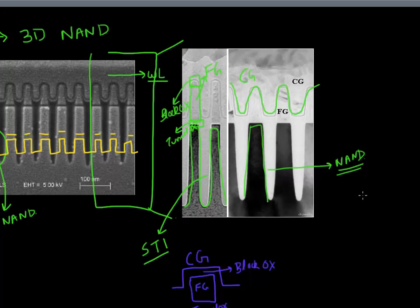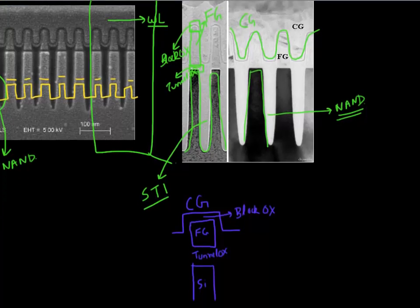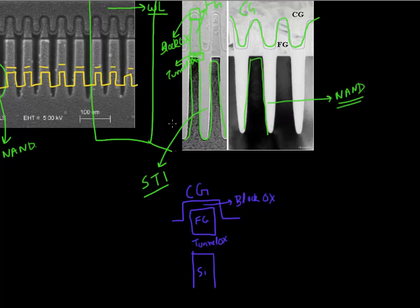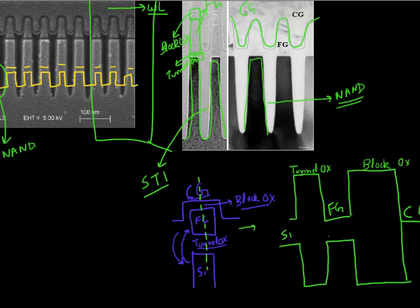I'm showing here a schematic of this one single NAND cell. It has the silicon, then it has the tunnel oxide, which controls the tunneling of electrons into and out of the floating gate. Then you have this blocking oxide, and then you have this control gate. If I plot the band diagram along this particular direction, this is how it would look like. You have the silicon, then your tunnel oxide, then your floating gate, then your blocking oxide, and then your control gate.